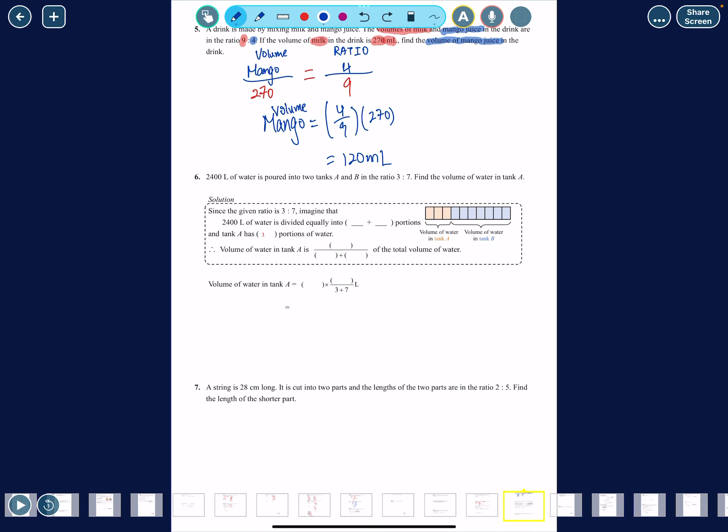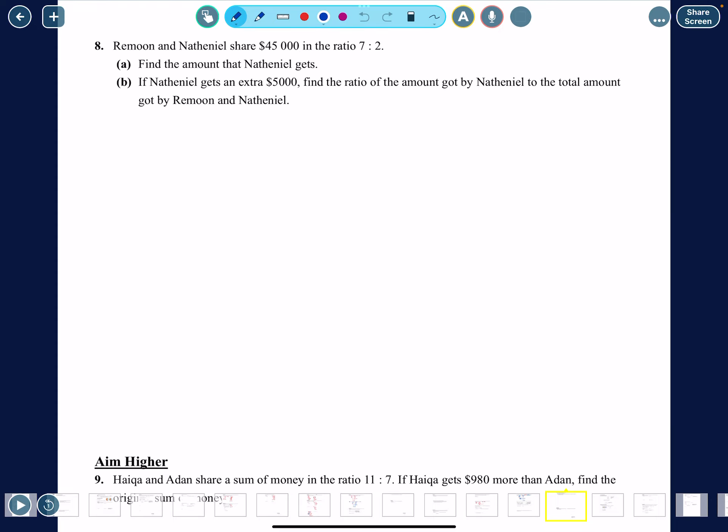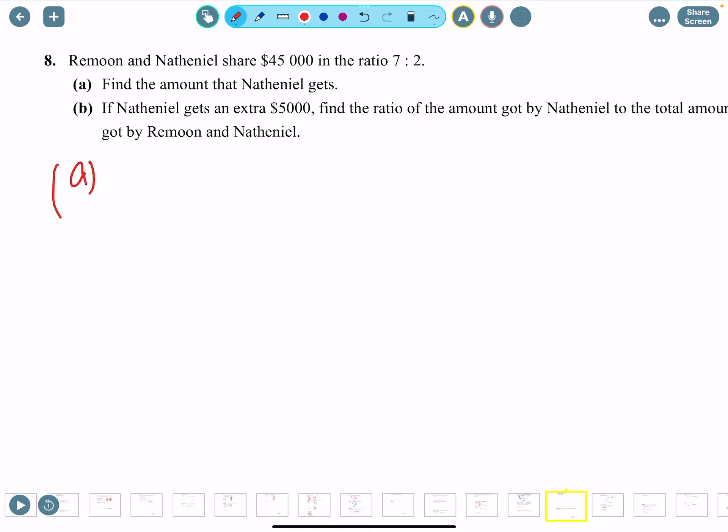Let's see if we can find how long this video is. Let's just stop here. Most likely, or maybe we can do this one really quick. Find the amount that Nathaniel gets. Here we go. $45,000 is the total, I will color that in purple. Red goes to 7, which is Ramoon, and then 2 is Nathaniel. We are finding how much Nathaniel got.